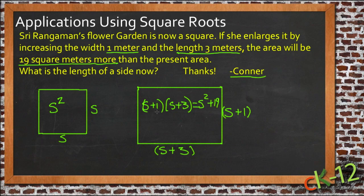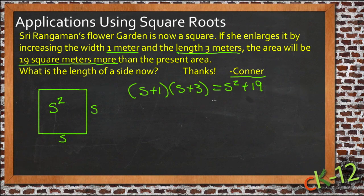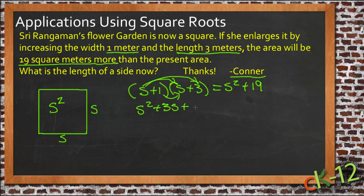So let's take this information: S plus one times S plus three equals S squared plus 19. Let me clear this out so we have a little more room to work. We have S plus one times S plus three equals S squared plus 19. So let's go ahead and FOIL this out. S times S is S squared, S times 3 is 3S, 1 times S is S, and 1 times 3 is 3. And it's still going to be equal to S squared plus 19.